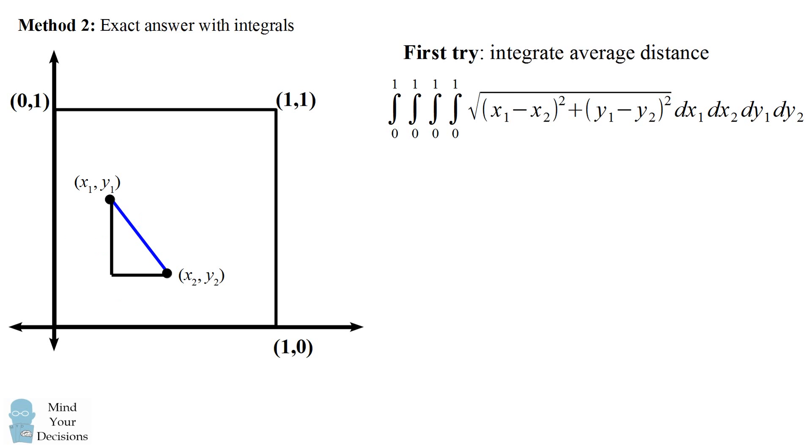The first thing we'll do is we'll reduce the number of independent variables. Instead of considering each coordinate, we'll only consider the distances in the x direction and the y direction. We have the absolute value of delta x and the absolute value of delta y. We'll consider distances between 0 and 1. We can rewrite our distance formula in terms of delta x and delta y. Before we integrate it, we have to take into account that delta x and delta y will have different distributions than the standard uniform distribution.